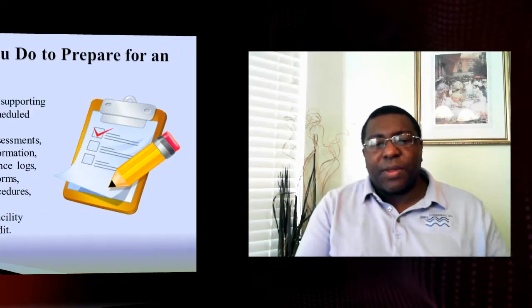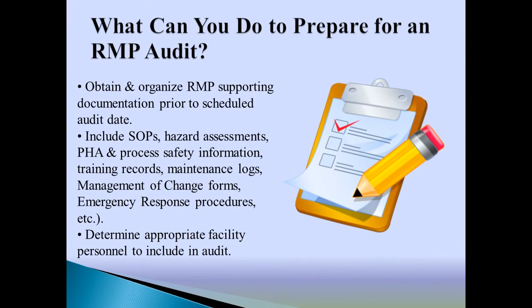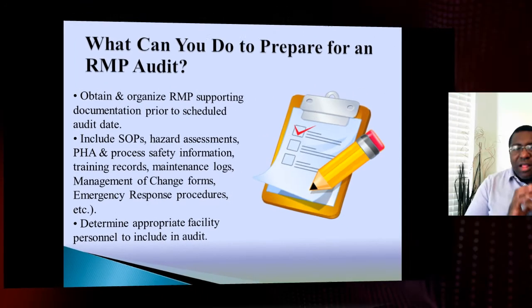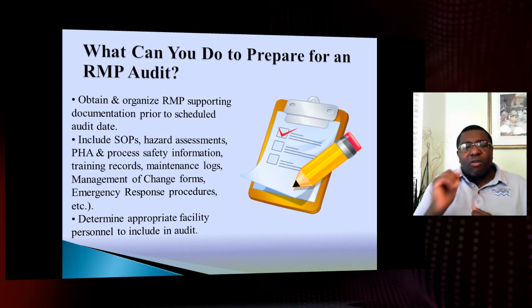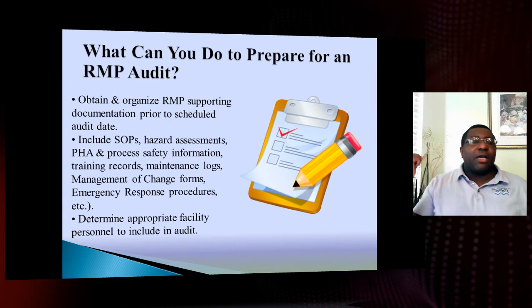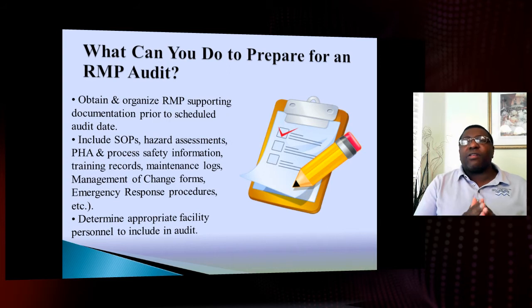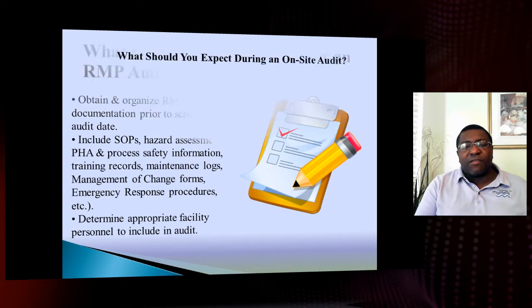To prepare for an audit: obtain and organize your risk management and support documentation prior to the scheduled audit date. Do a quick self-audit when you get that letter. Look over your Process Hazard Analysis or Job Safety Analysis, your SOPs, hazard assessments, training records, maintenance logs, and management of change documentation. Anything in that RMP plan is subject to being audited, so review it as if you're auditing yourself.